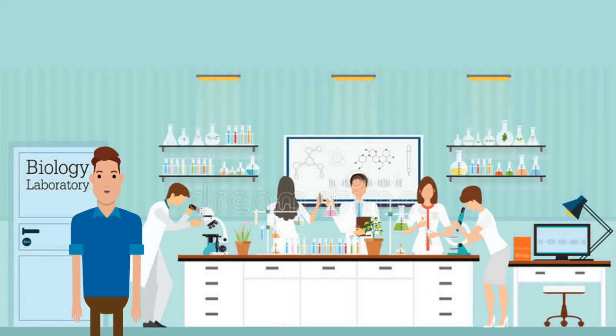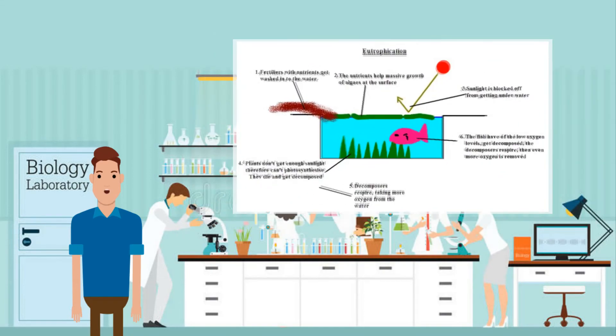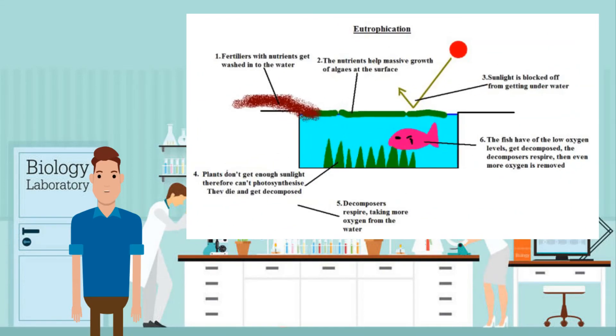Most fertilizers contain multiple elements as supplements. These are things like NPK fertilizers, which contain nitrogen, phosphorus, and potassium. However, nitrogen-containing fertilizers can be dangerous when overused, causing eutrophication. Eutrophication is when the excess fertilizers get washed off and flow into bodies of water.